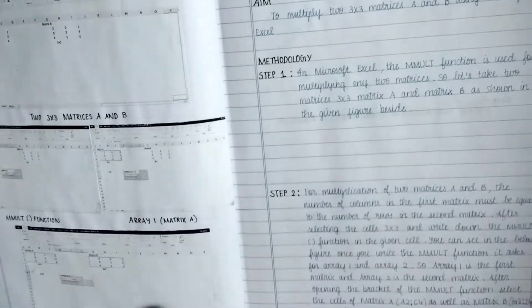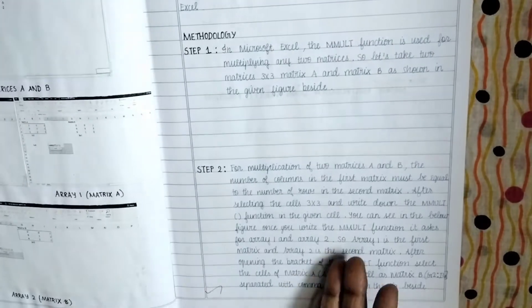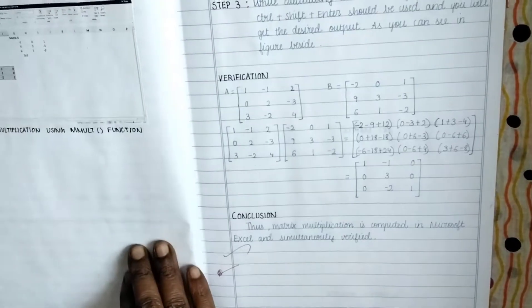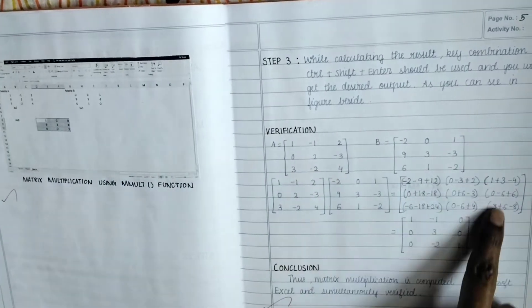So that is the relevant step one and step two of this particular window. And then how the matrix multiplication answer will come, and that is being manually verified here also.